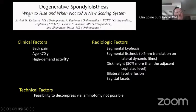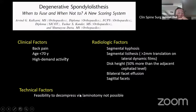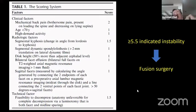I like the Kulkarni scoring system. He grades clinical, radiological, and technical factors: mechanical back pain scores 2, younger age scores 1, segmental kyphosis 1.5, segmental dynamic listhesis 1 point, and preserved disc height 1 point. If the total score is more than 5.5, this indicates instability, and those cases should better proceed to fusion surgery. This is one scoring system to help decision-making in lumbar spine stenosis — whether to fuse or not.